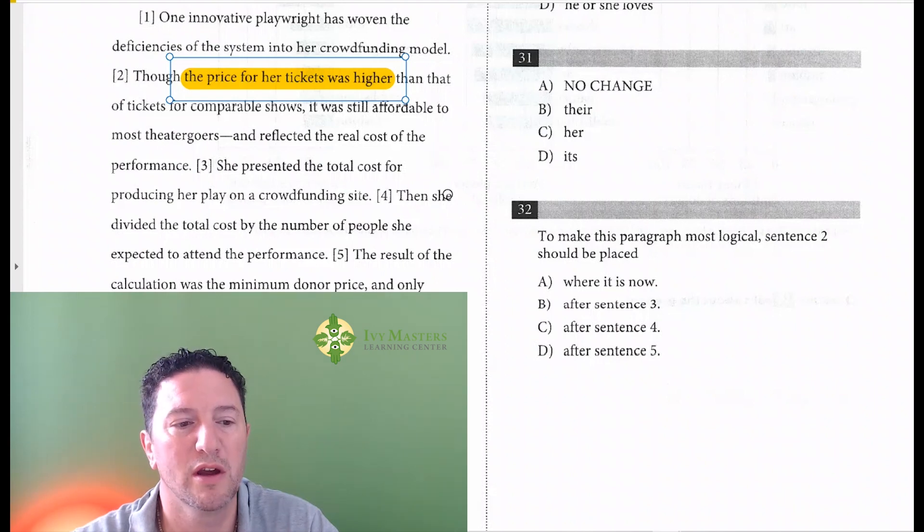Then she divided the total cost by the number of people she expected to attend the performance. So it sounds like she's still figuring out the cost of her performance and of the ticket price. So after sentence 4...